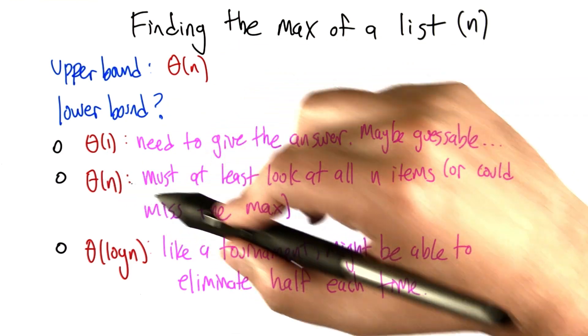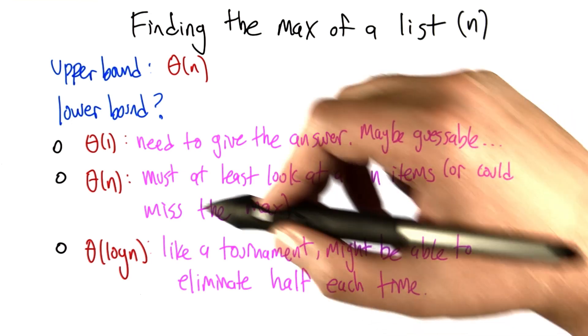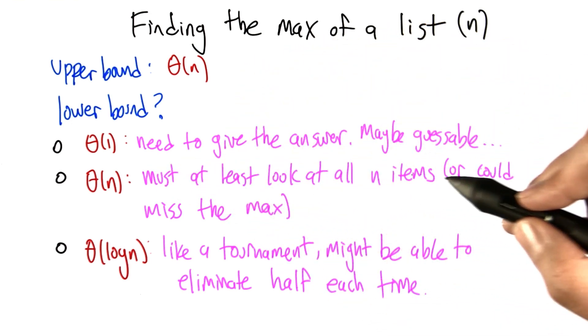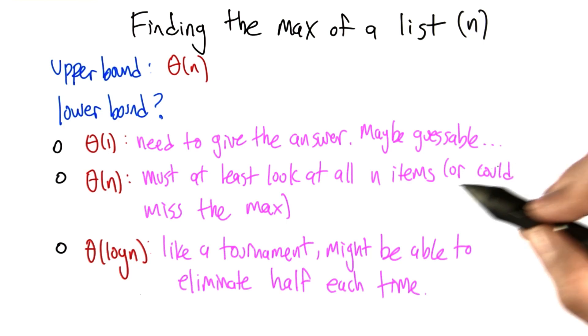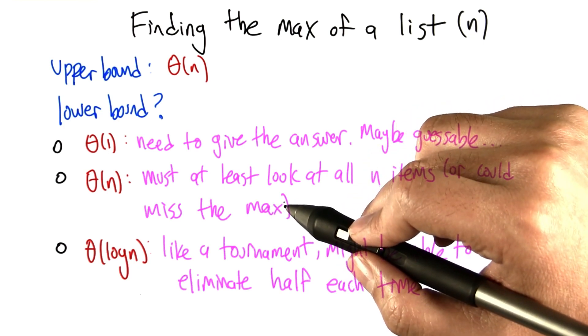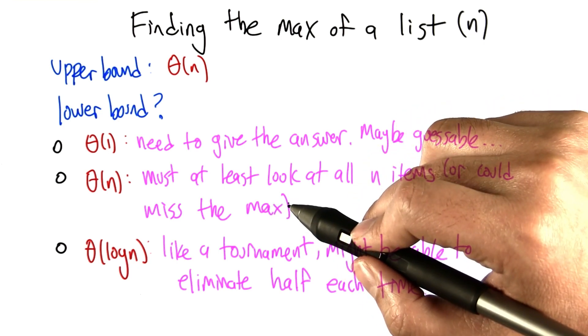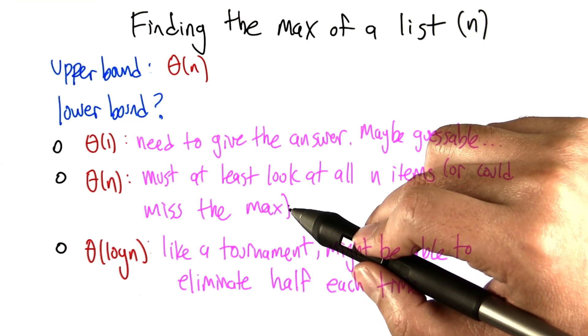Here's another one. Big theta of n might be a lower bound. Why? Because you have to at least look at all the n items. Otherwise, there could be one item in the list that is the max that you didn't look at, and so you can't possibly return the right answer.